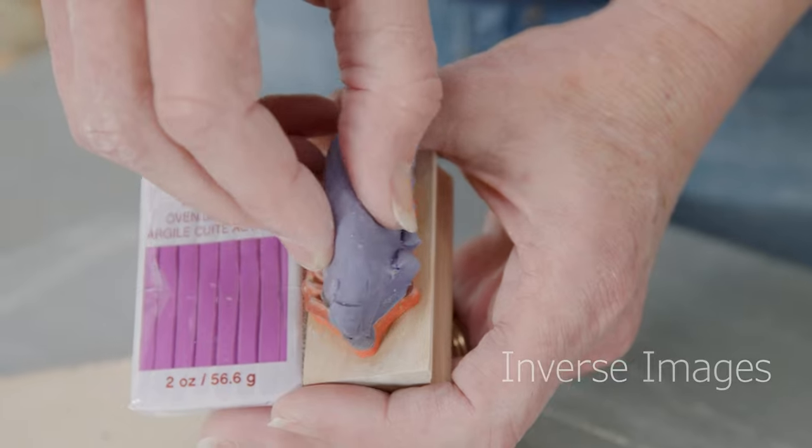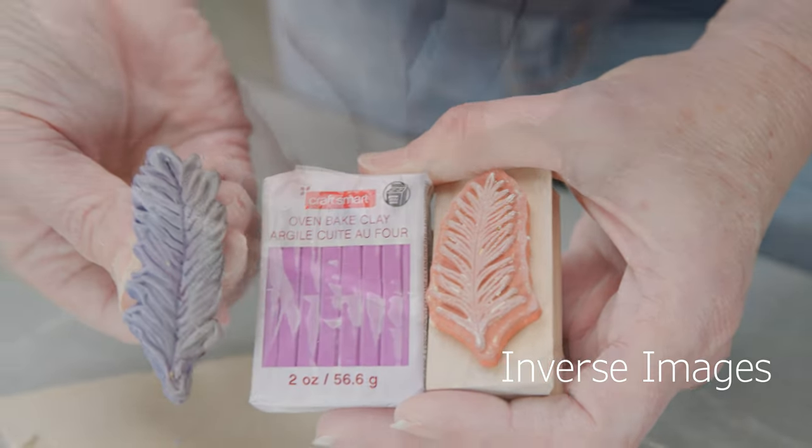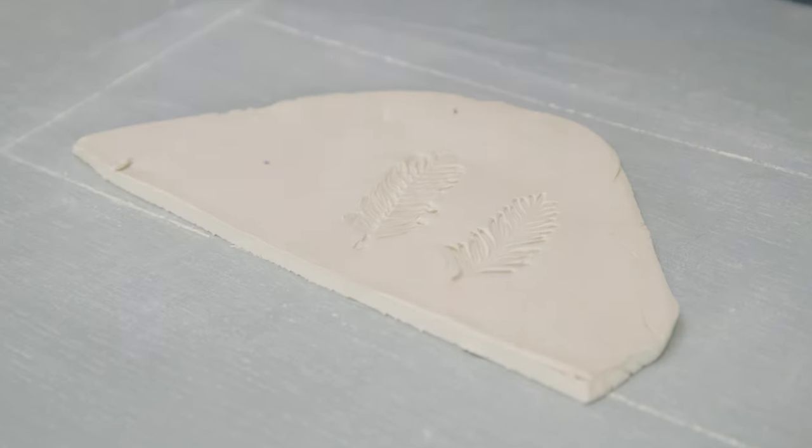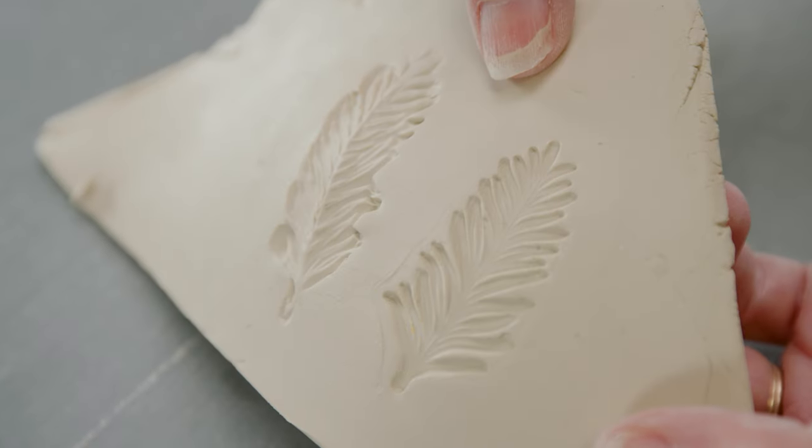Polymer clay takes on very intricate details, so I can mold it over designs that I want to capture. This leaf is a good example. Now I can use the stamp to make a negative image, and I can use the polymer clay to create the inverse of the same image.